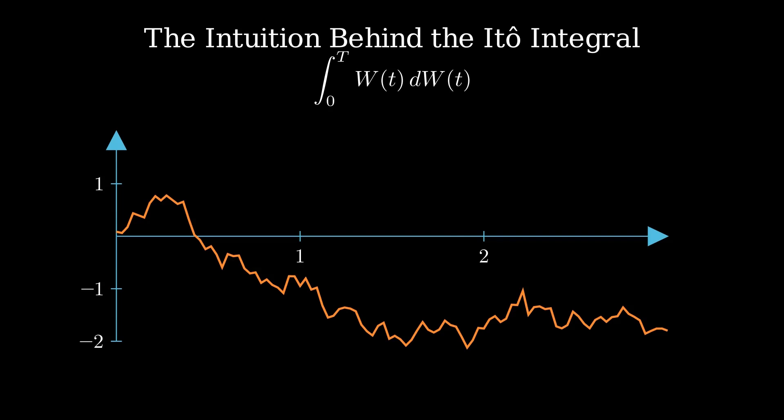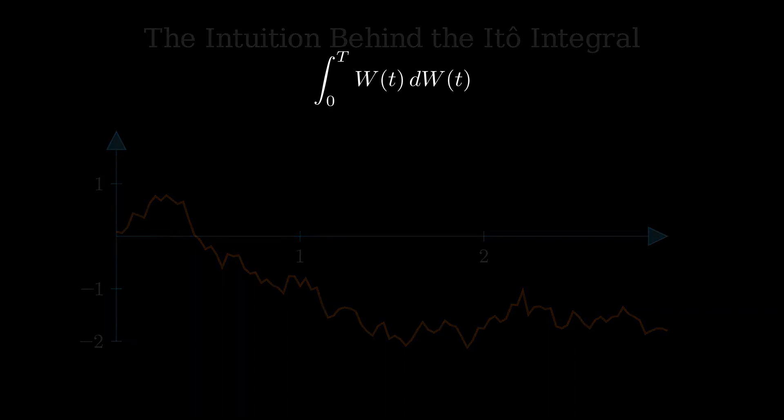It's a way to sum up the tiny random changes in a process like Brownian motion, shown here. Now let's focus on the equations. To understand it, we use Itô's lemma on W². This tells us that the small change in W² is 2W dW + dt. That extra dt comes from the randomness and is what makes Itô calculus special.